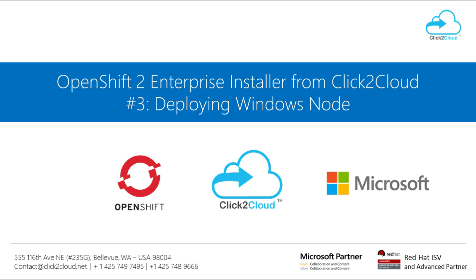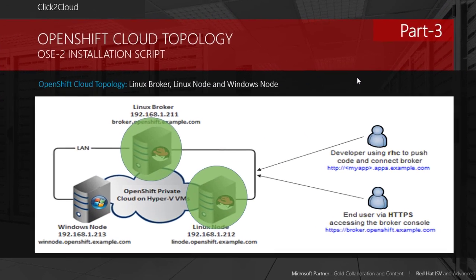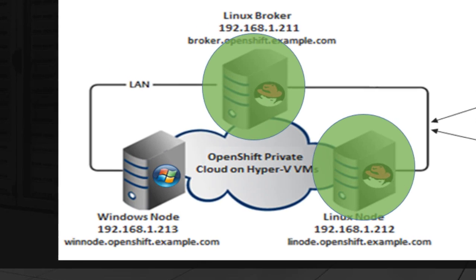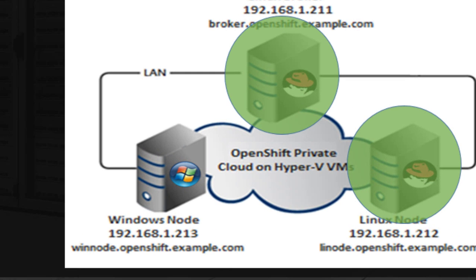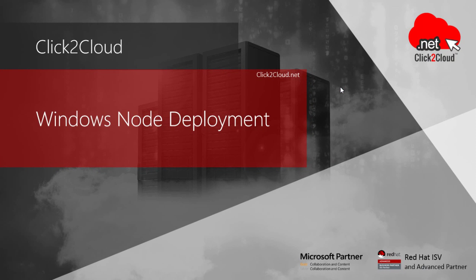Hello everyone, welcome to Click2Cloud. In the previous two videos of the OpenShift Enterprise Installation Script Series, we saw successful deployment of OpenShift Linux Broker and Linux Node. In this video, I am going to show you how to deploy OpenShift Windows Node on your machine. The IP and hostname displayed here will be used in the demonstration. Let's move ahead with the demonstration.